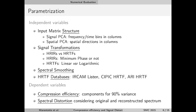We also experimented with different signal transformations: we used head-related impulse responses and head-related transfer functions, so time versus frequency domain. For the time-domain HRIRs, we used minimum phase approximation but also the standard impulse responses. For the HRTFs, we used either linear or logarithmic magnitude. We also used smoothing, which I will talk about in the next slide.